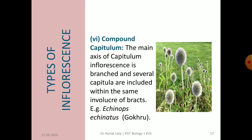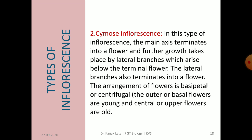Now we will move towards cymose inflorescence. Here the main axis always terminates into a flower and further growth takes place by formation of lateral branches. These lateral branches always arise below the terminal flower, which is why older flowers are at the top and younger flowers at the bottom. Further, lateral branches also terminate into a flower.